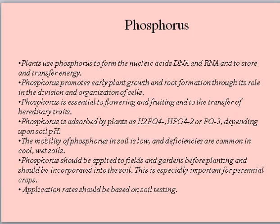Phosphorus should be applied to fields and gardens before planting and should be incorporated into the soil, especially for perennial crops. Application rates should be based on soil testing. Interesting results were obtained in an experiment with corn: maize seedlings at the age of 10 days were transferred to a nutrient medium. Each newly appearing leaf was monitored. It turned out that phosphorus content was the same in all, as the outflow of phosphorus from older leaves went to young leaves. Further studies showed that the majority of mineral nutrition elements are mobilized, however some are practically not reutilized due to low mobility and poor solubility.